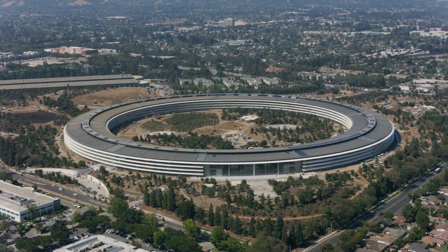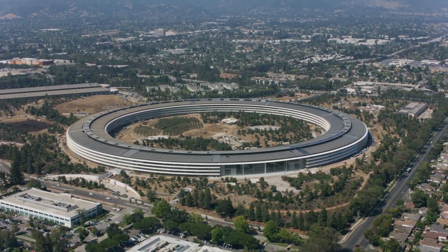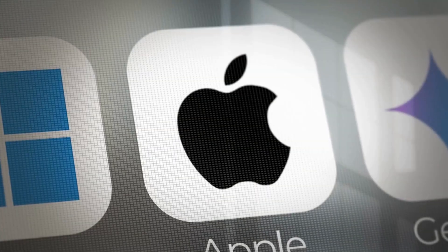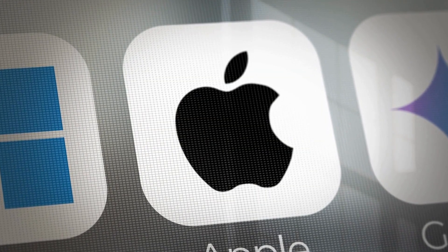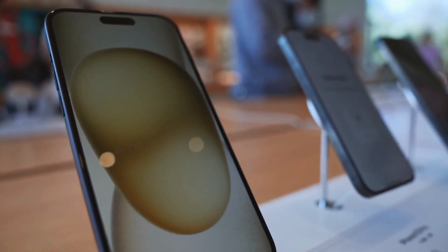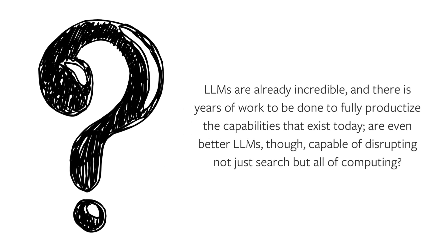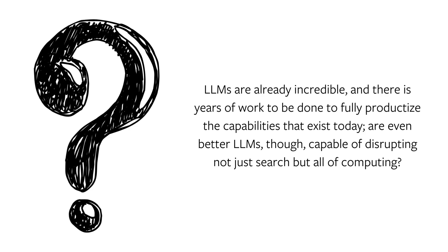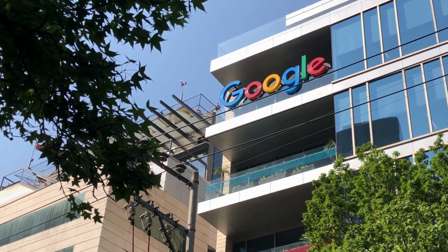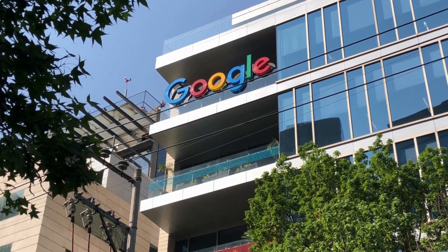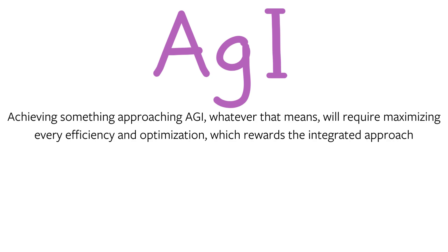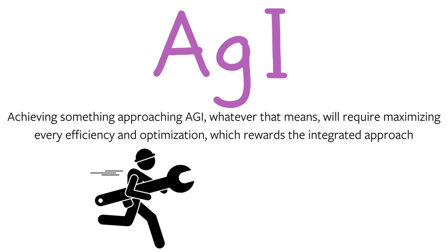AI or AGI. The one company that I have not mentioned so far, at least in the context of AI, is Apple. The iPhone maker, like Amazon, appears to be betting that AI will be a feature or an app. Like Amazon, it's not clear to what extent this is strategic foresight versus motivated reasoning. LLMs are already incredible, and there are years of work to be done to fully productize the capabilities that exist today. Are even better LLMs capable of disrupting not just search but all of computing? To the extent that the answer is yes, the greater advantage I think that Google's integrated approach will have, for the reasons Christensen laid out. Achieving something approaching AGI — whatever that means — will require maximizing every efficiency and optimization, which rewards the integrated approach.